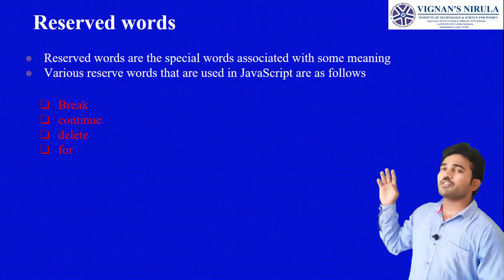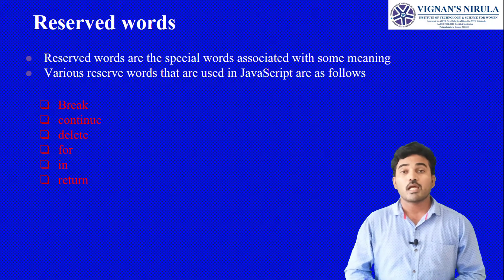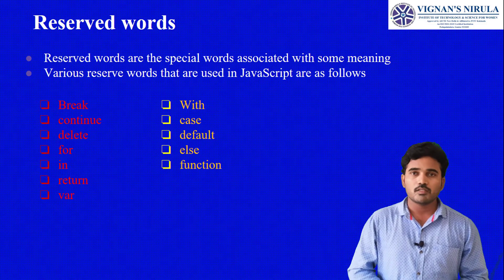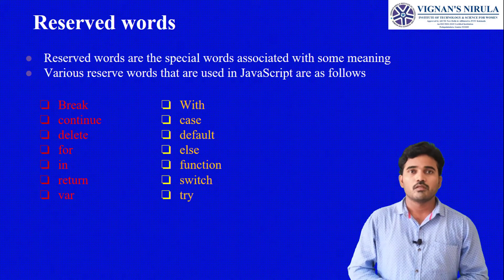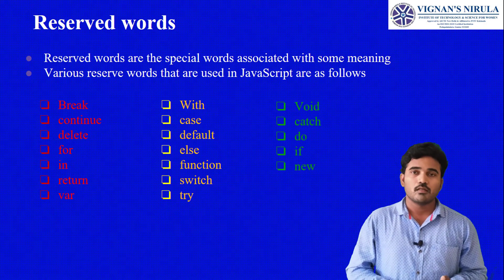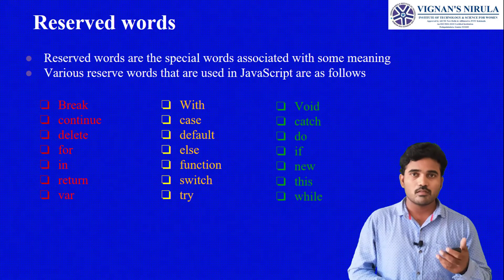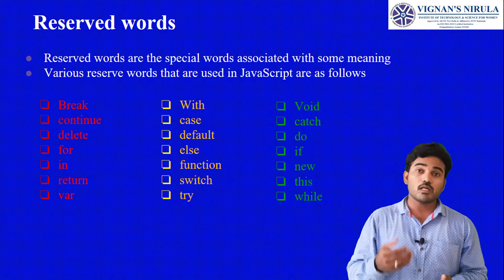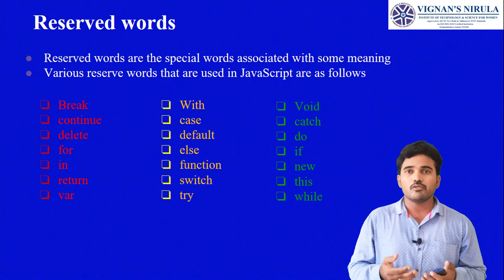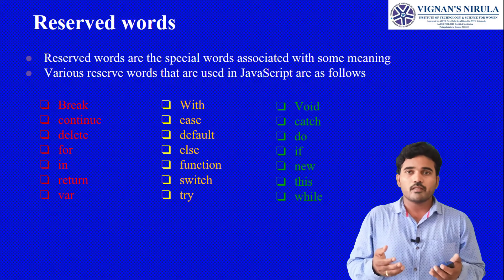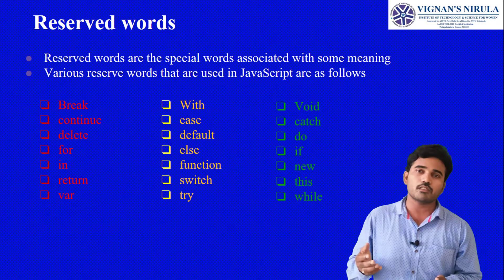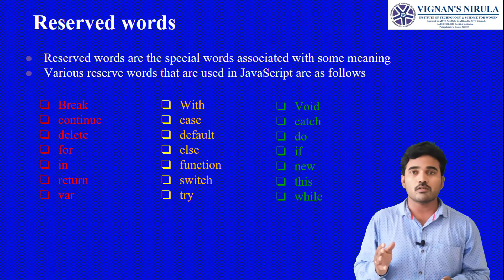Reserved words have a fixed meaning that cannot be changed. Various reserved keywords are available in JavaScript, similar to C, C++, or Java — such as auto, break, case, var, const, do, double, else, enum, and so on. The same keywords used in previous languages apply here, with some additions like the VAR keyword.